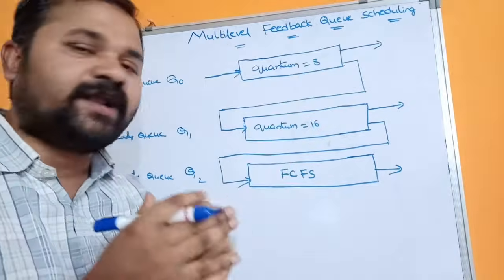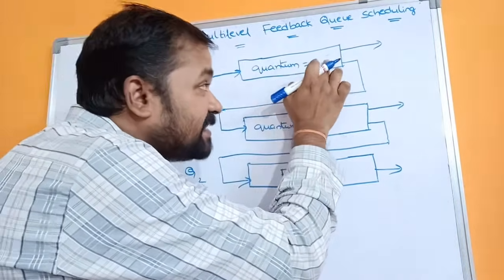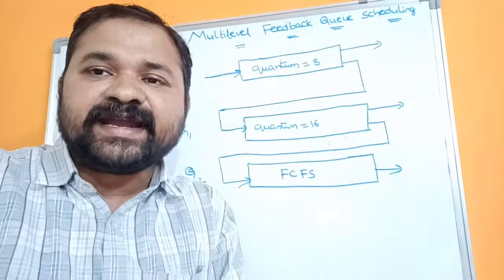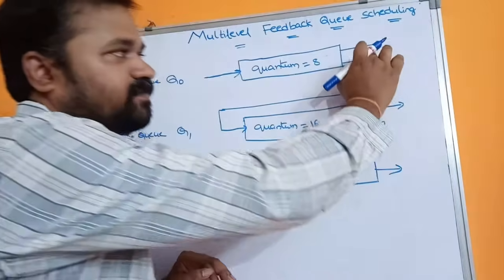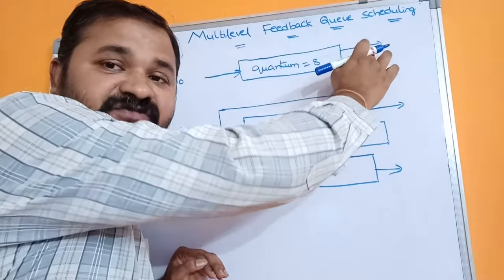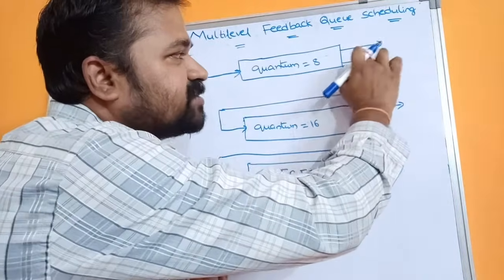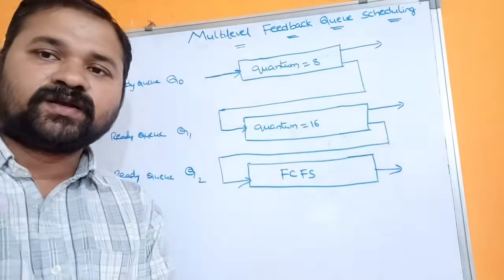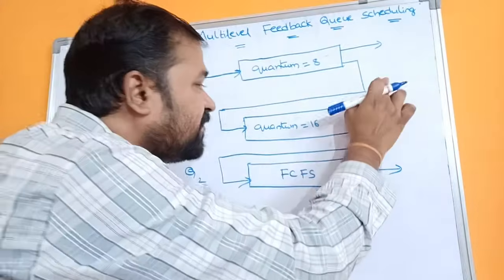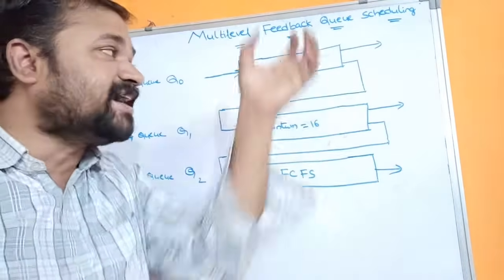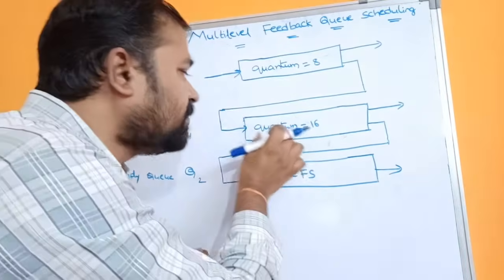Here we use Round Robin scheduling, so the CPU executes each process for a time slice of 8 milliseconds. If a process burst time is less than 8 milliseconds, there is no problem — that process execution completes and the CPU produces the output. Or, if a process is waiting for some I/O operation after 8 milliseconds, it will be moved to a waiting queue or I/O queue. However, if a process burst time is greater than 8 milliseconds, then that process will be moved to ready queue Q1.